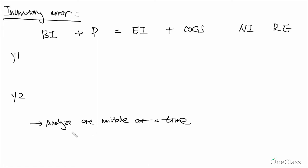And now let's do a brief review of how the inventory error could impact several accounts. And the beginning inventory plus purchase equals to ending inventory plus cost of goods sold is the most important formula that you can use in determining what account is overstated or what account is understated.